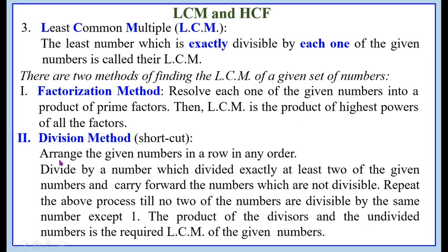The second method for LCM is the division method. Arrange the given numbers in a row in any order. Divide by a number which divides exactly at least two of the given numbers, and carry forward the numbers which are not divisible. Repeat the above process till no two of the numbers are divisible by the same number except one. The product of the divisors and the undivided numbers is the required LCM.